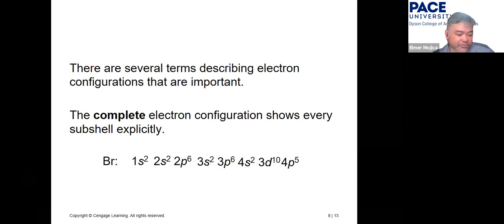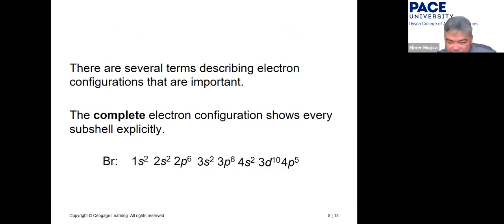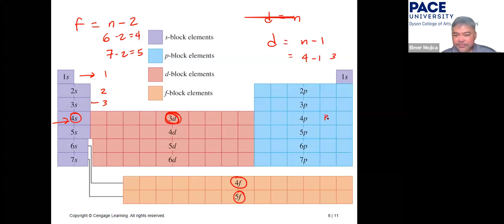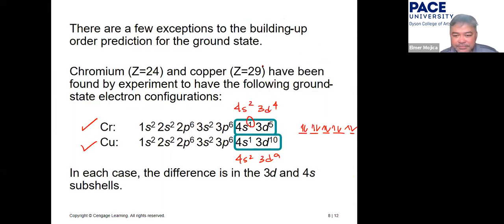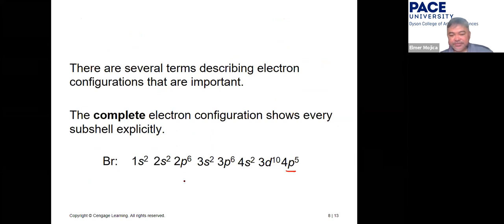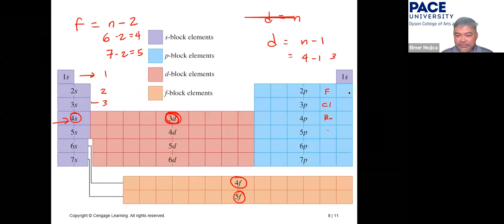For example, bromine is at 4p⁵ on the periodic table — count one, two, three, four, five, and that's 4p⁵. You then fill up everything before it. If asked for the complete electron configuration you must write all orbitals; otherwise there are shortcuts available.